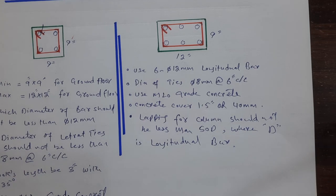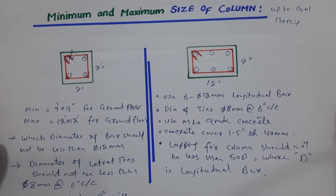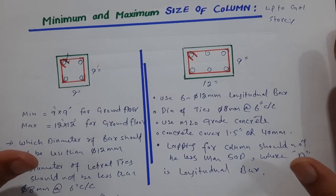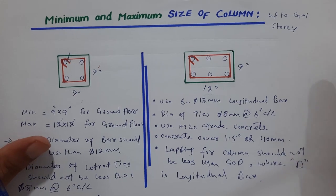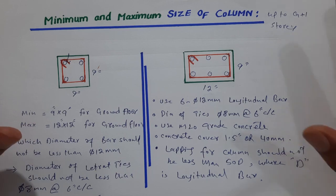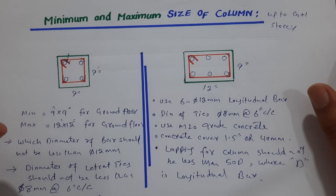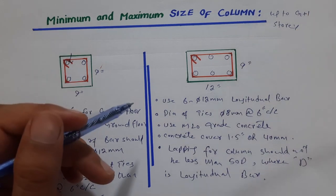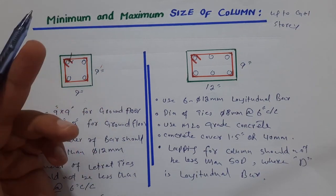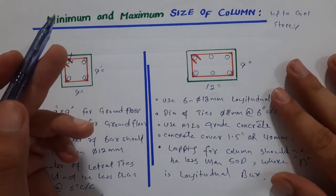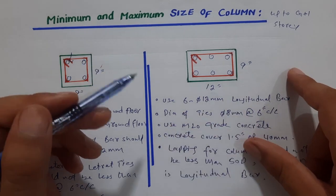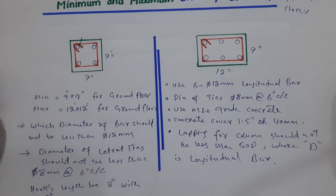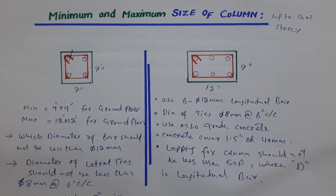If you want to go beyond G plus one — for G plus two or G plus three story — you should share the planning before starting construction. There are maximum and minimum spacings between columns to consider. For more than G plus one, you should hire a structural engineer to provide structural drawings for foundation, beam, column, slab, and steel reinforcement. They will give you an economical design. For normal residential buildings up to two stories, the information discussed here is what you need to know. Thanks for watching — see you in the next video.